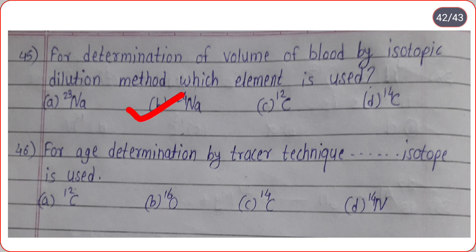For age determination by tracer technique, dot-dot isotope is used. Options are carbon-12, oxygen-16, carbon-14, nitrogen-14. Correct option is option C, carbon-14.